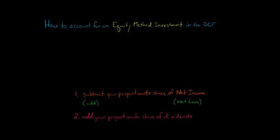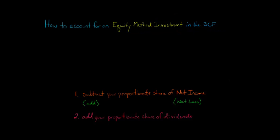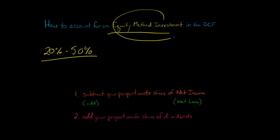In this video, we're going to discuss how to account for an equity method investment when you're preparing the statement of cash flows. An equity method investment is when your firm owns between 20 and 50 percent of another company's equity. So you own, let's say, 30 percent of the stock in another firm, and we say that that's an equity method investment.